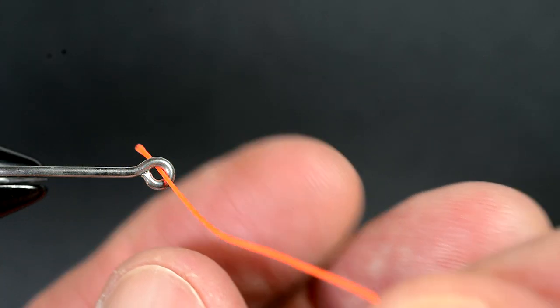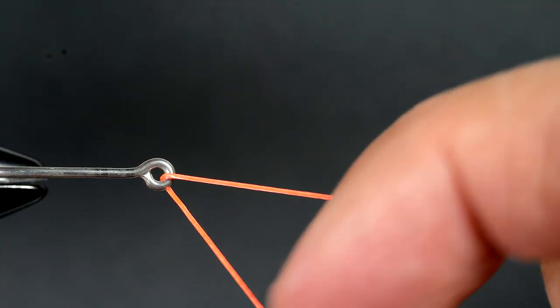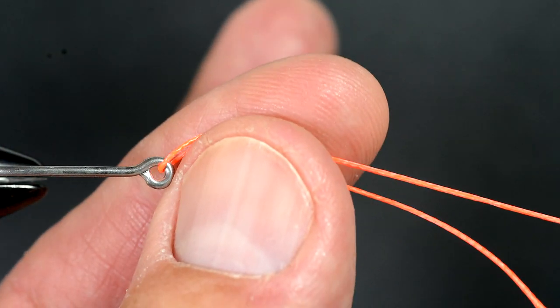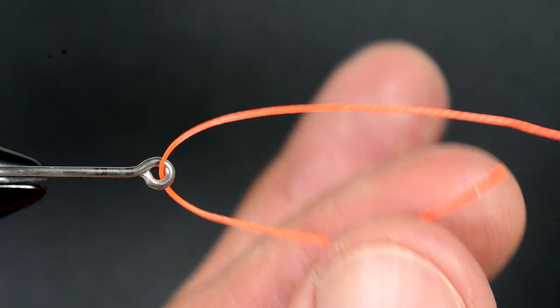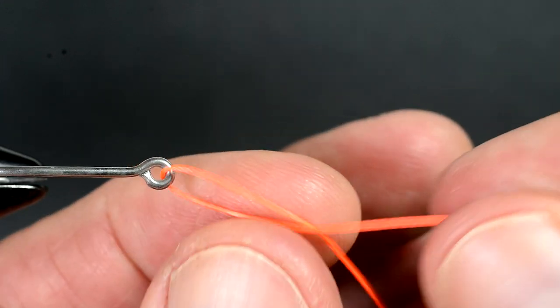Thread the line through the eye of the hook, double back and make 4 to 8 turns around the standing line.